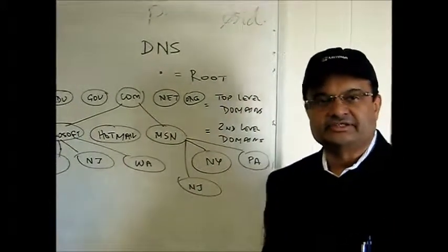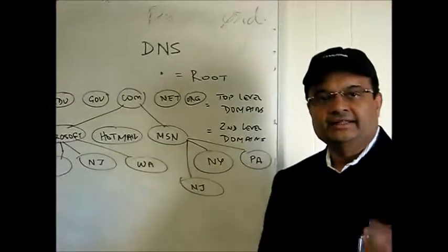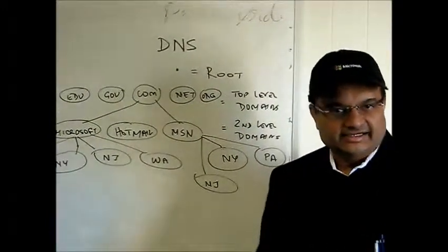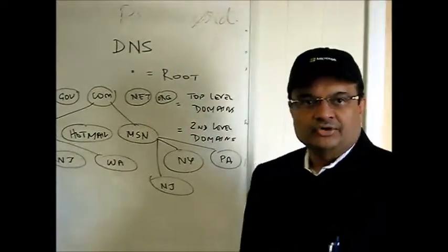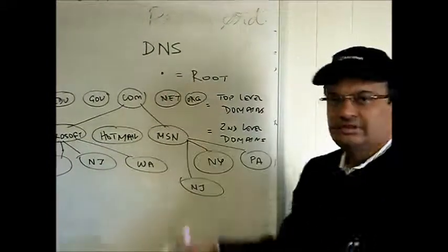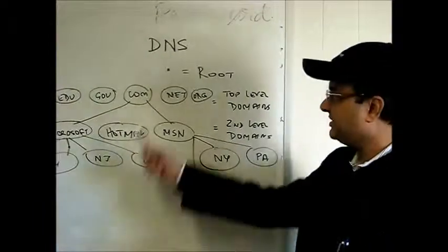DNS is a universal format followed worldwide, and the most important implementation of DNS is the internet. In order to go to the internet, DNS first creates the root, that is the top. Everything in DNS starts with the root represented by a dot.